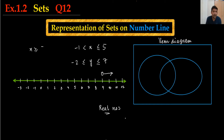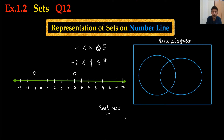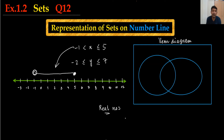Moving to part 3: X is between minus 1 and 5. Minus 1 is here — I will draw a circle. And 5 is here — I will draw a circle. The equal-to sign means I will fill the circle. This is not equal to, this is only greater than. So I will shade this range. When we have only greater than or only less than, we will not fill the circle.